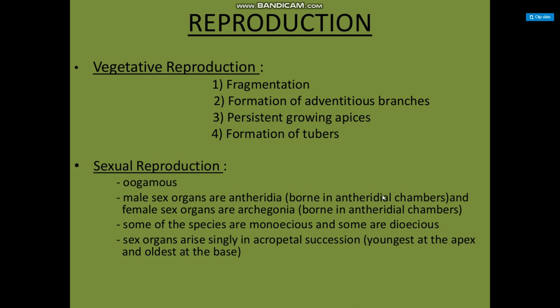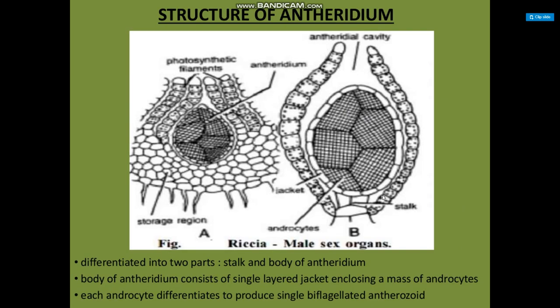Sexual reproduction is oogamous type in Riccia. Male sex organs are antheridia, born in antheridial chambers, and female sex organs are borne in archegonial chambers. Some species are monoecious and some are dioecious. Sex organs arise singly in acropetal succession — youngest at the apex and oldest at the base.